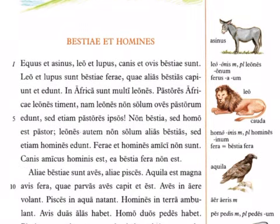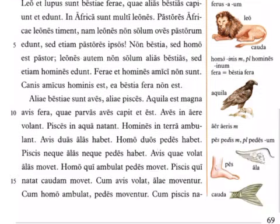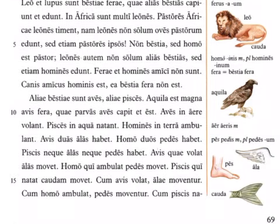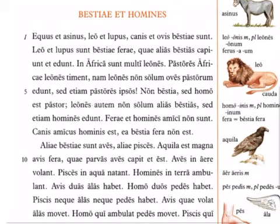Aquila is related to the word eagle in English, and that's what it means. We have some body parts here. Pes, pedis is foot — we get pedal and pedestrian from that. Ala is wing. Cauda is tail — we get 'caudal fin' from that; the tail fin is called the caudal fin in more technical language.